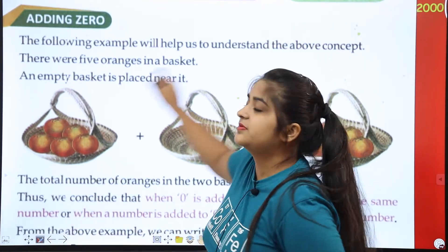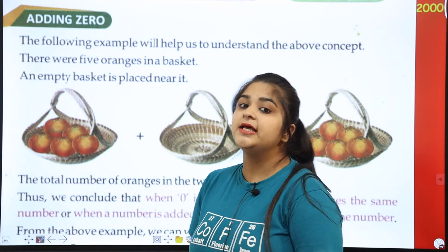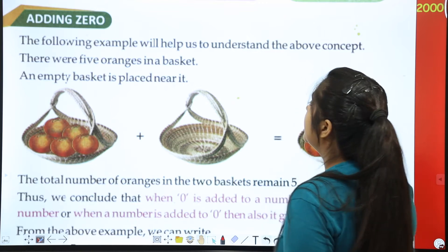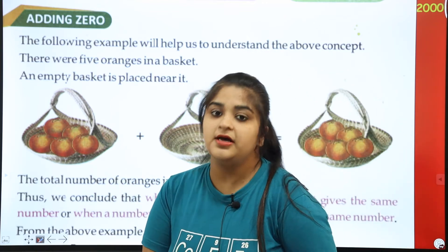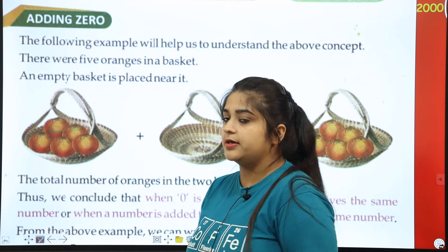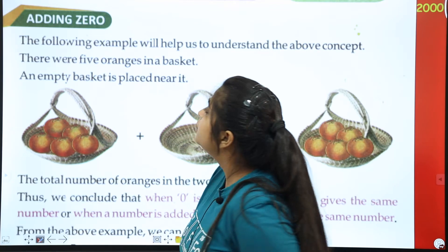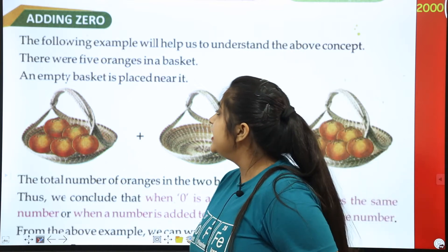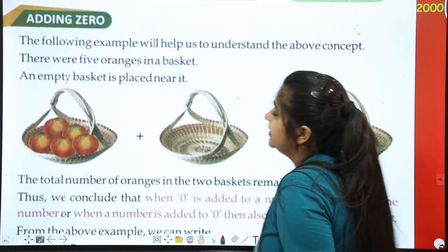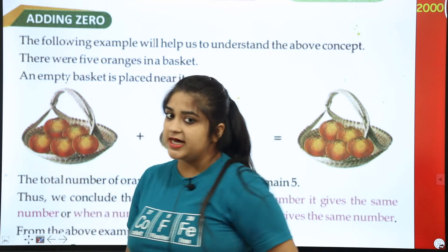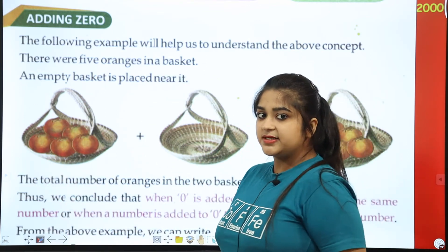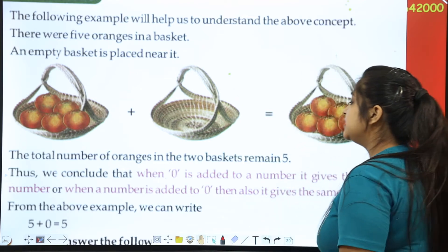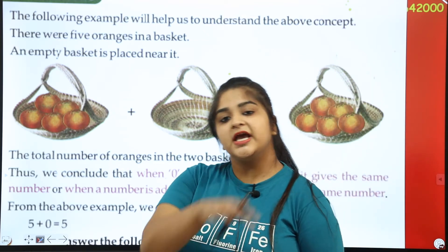Let's go to the second concept — Adding 0. The following example will help us understand this concept. There were 5 oranges in a basket. An empty basket is placed near it. The total number of oranges in the 2 baskets remains 5.